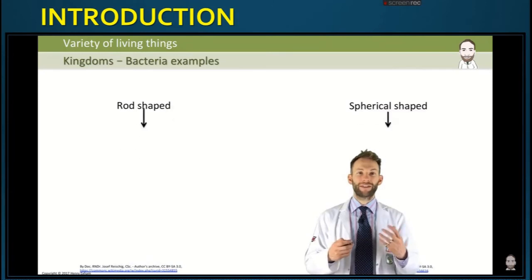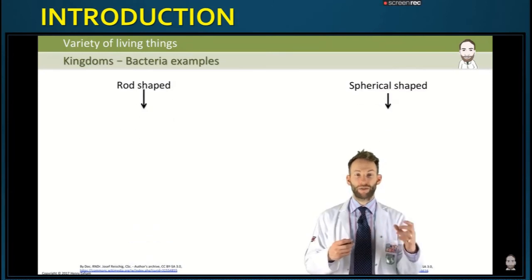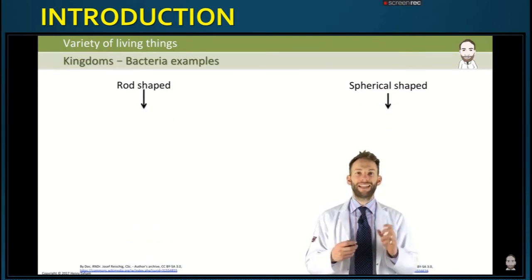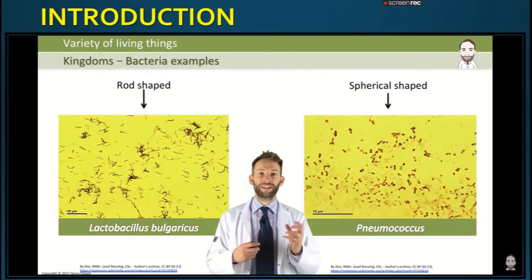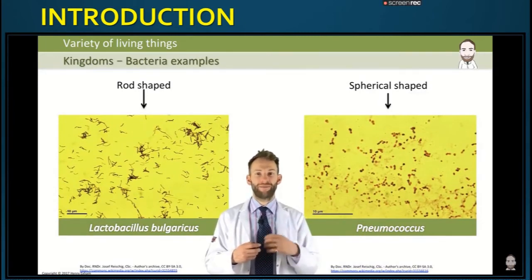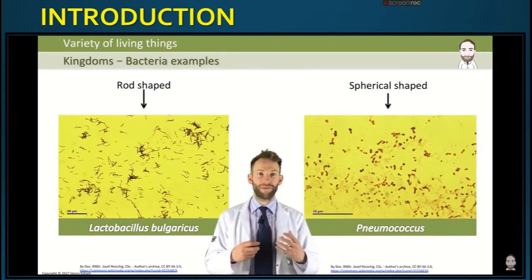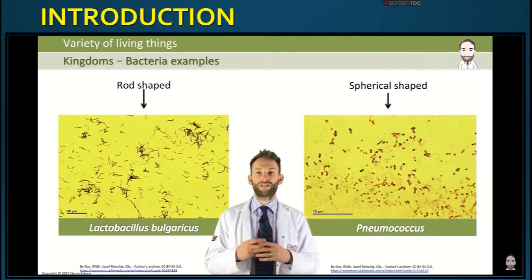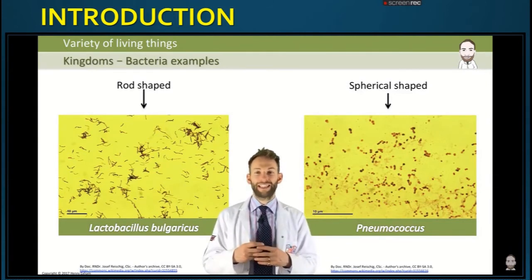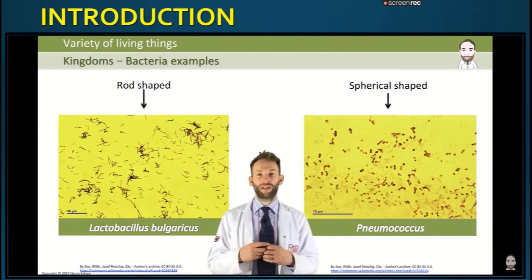Here is a diagram of a typical bacterial cell showing the plasmid, flagella, chromosome, membrane, cell wall, capsule, and cytoplasm. Bacteria are further classified according to their shape. Rod-shaped ones include Lactobacillus bulgaricus, which is used to make yogurt from milk. Spherical-shaped ones are called pneumococcus, and these actually cause the disease pneumonia.